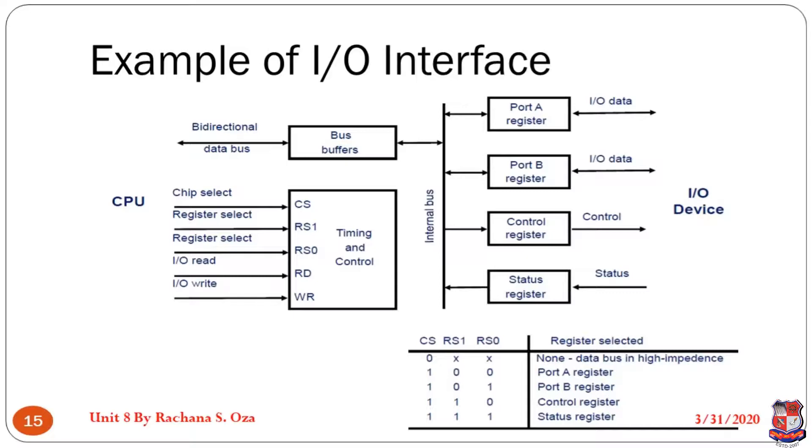Control register is used to generate some control signal, and status register is used to represent the current status. Over here you can see the bus buffer, again it is bi-directional. You can see one entity, CPU, over here. CPU can generate all sorts of signals to communicate with this interface. This interface is connected with the left-hand side with the help of the internal buffer.